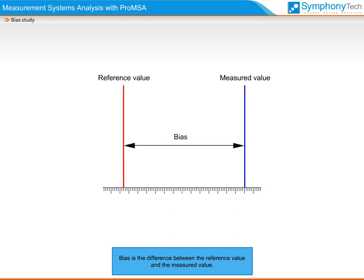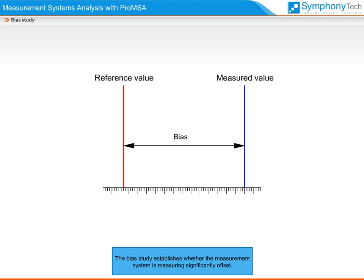Bias is the difference between the reference value and the measured value. The bias study establishes whether the measurement system is measuring significantly offset.